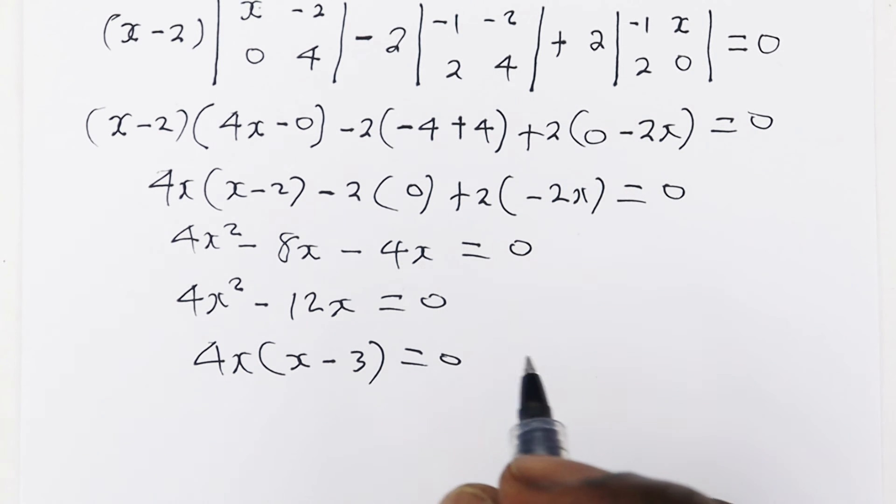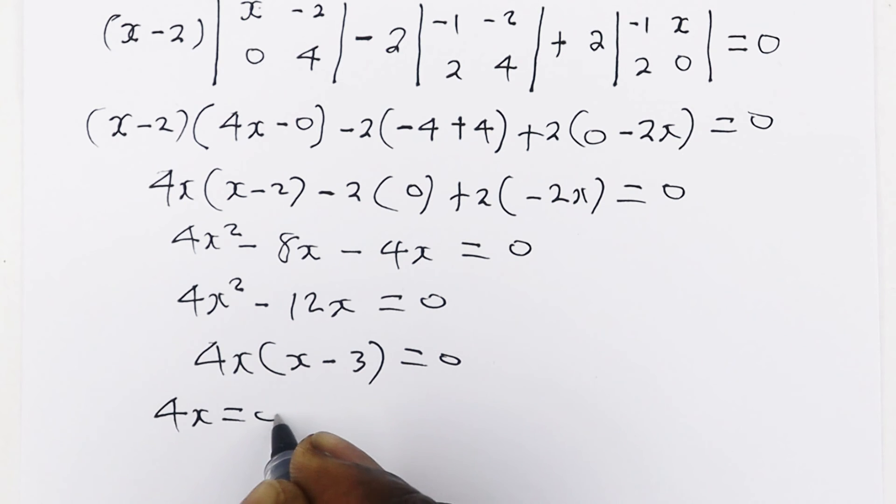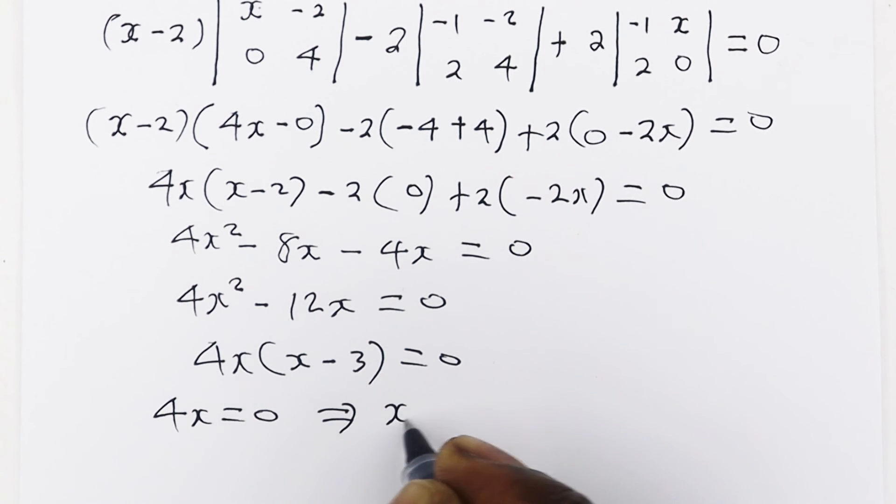According to this, the product between this term and that term is 0. So it means one of them has to be 0. If you take that 4x is equal to 0, then you are going to have x being equal to 0. Or we could take that x minus 3 is equal to 0, and that means x is equal to 3.